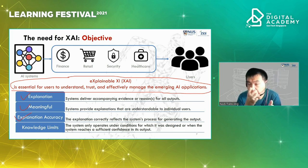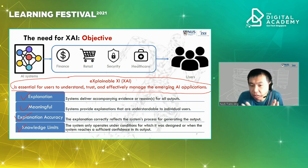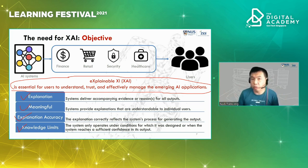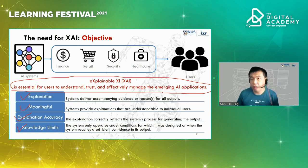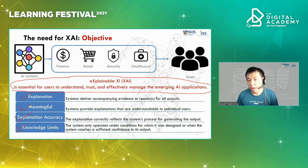Third, explanation accuracy — correctly explaining the AI system's decisions without making wrong explanations. Fourth, knowledge limit — helping us understand the suitable conditions under which to trust the AI system. For example, in video surveillance, if the AI system requires certain lighting conditions to detect humans, but you deploy it at midnight when lighting is insufficient and the image is too dark, the output may not be reliable. XAI can clearly tell you the system's limits and what conditions are needed for reliable performance.